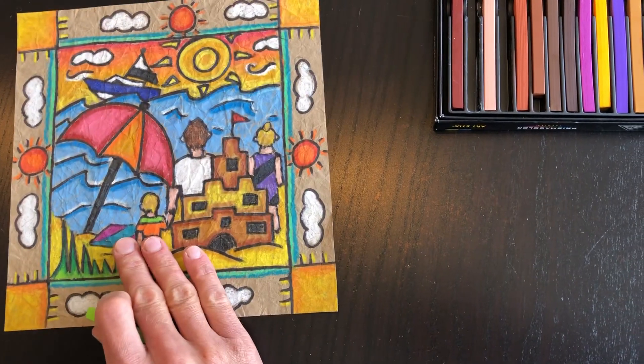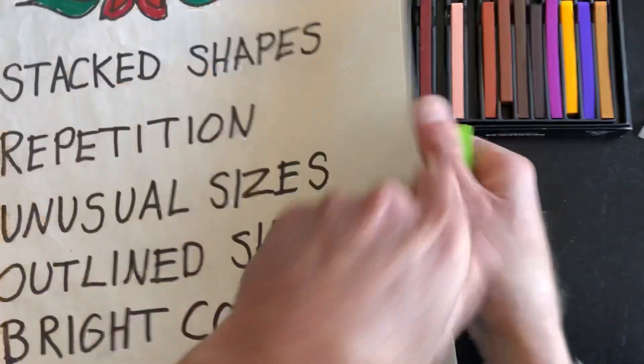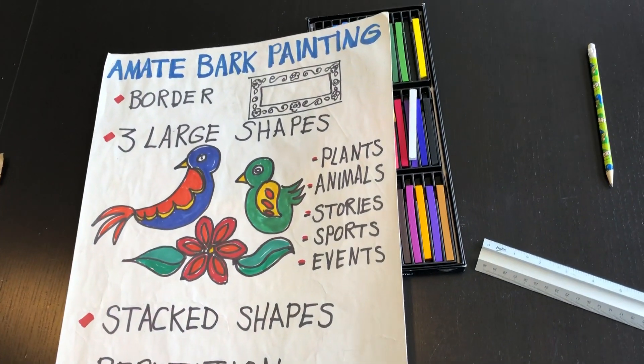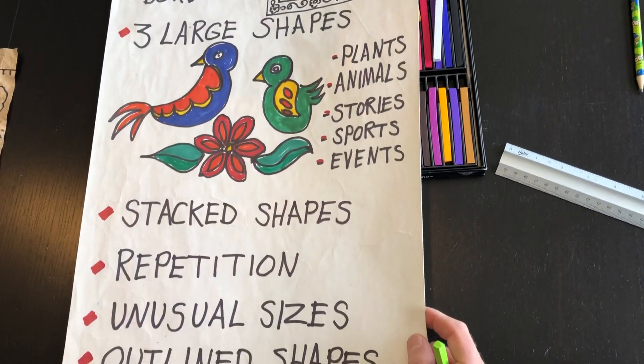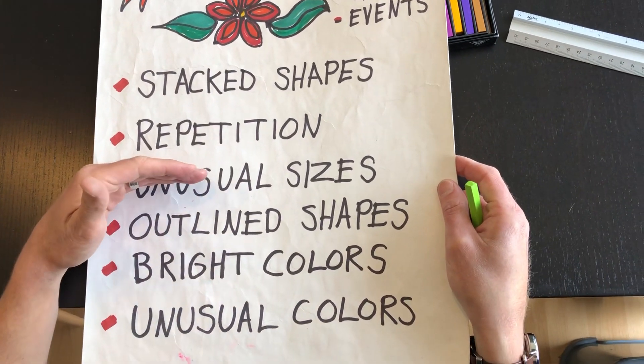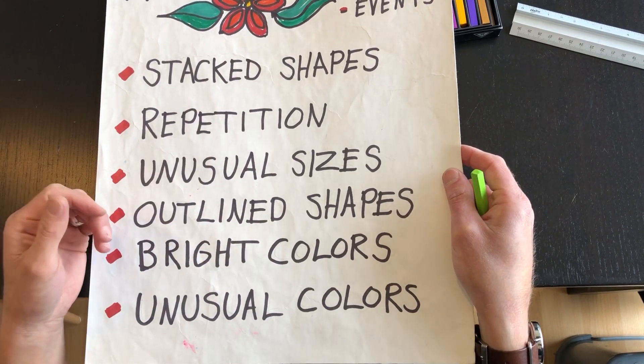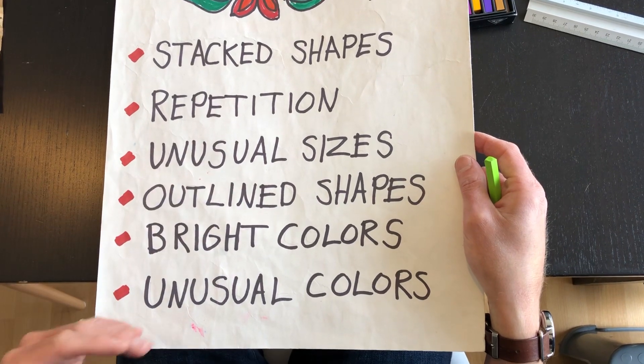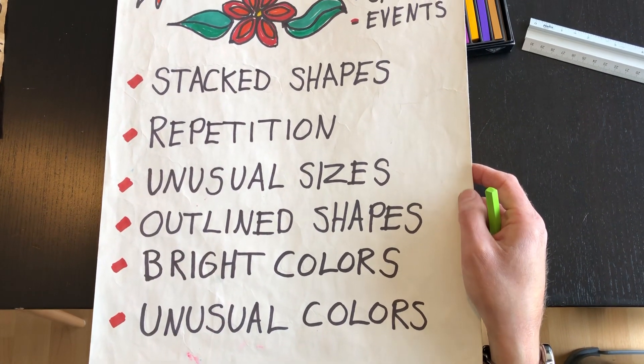So try to press your color on hard. Use these ideas of starting off with a border, three large shapes, then stacking shapes to fill it in with lots of detail, repeating things to create pattern, unusual sizes so it's a little bit more abstract, outlining of shapes and bright colors, and unusual colors too. So I hope you have fun with this. Please keep being creative using your artistic talents. I miss seeing you all.